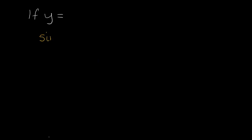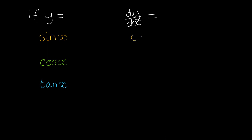Let's look at what happens when we differentiate these three common trig functions. The differentiation of sine x is cos x, cos x is minus sine x, and tan x is sec squared x. Now we're going to use these facts to work out what happens when we differentiate the reciprocal trig functions.